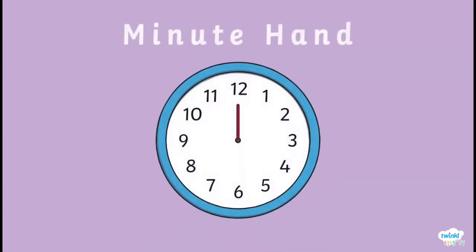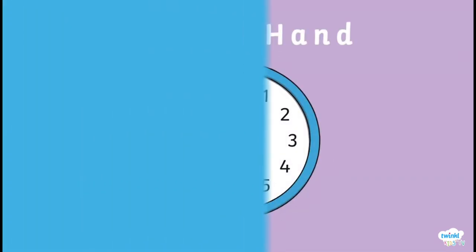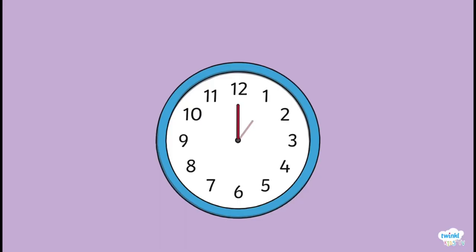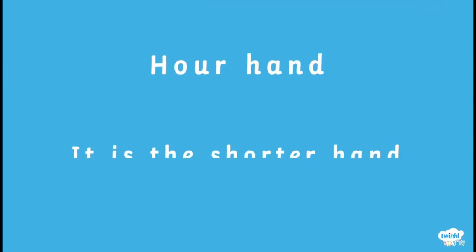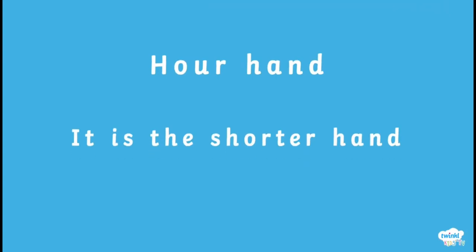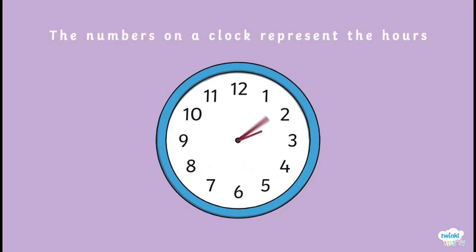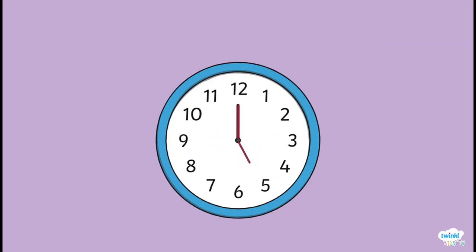We have two types of hands on the clock. This is the minute hand — the minute hand is the longer hand. The other type is called the hour hand. This hand lets us know what hour it is, and it is the shorter hand.